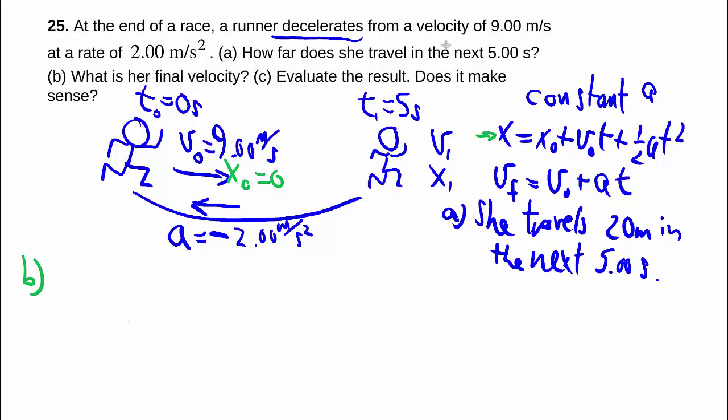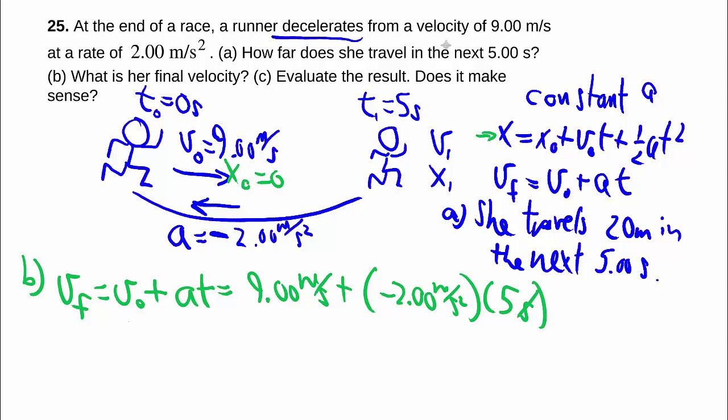Part B. This time they're asking for the final velocity. That's going to be using this formula. Again, the unit should work out, so we have 9.00 meters per second plus negative 2.00 meters per second squared times 5 seconds, no square this time. So we just end up with meters per second as we expect.